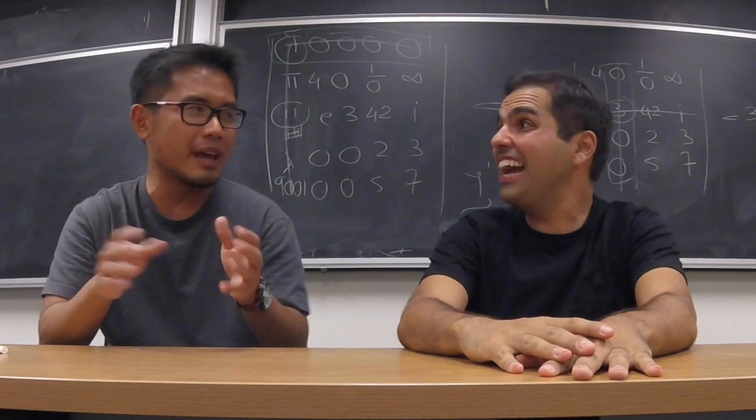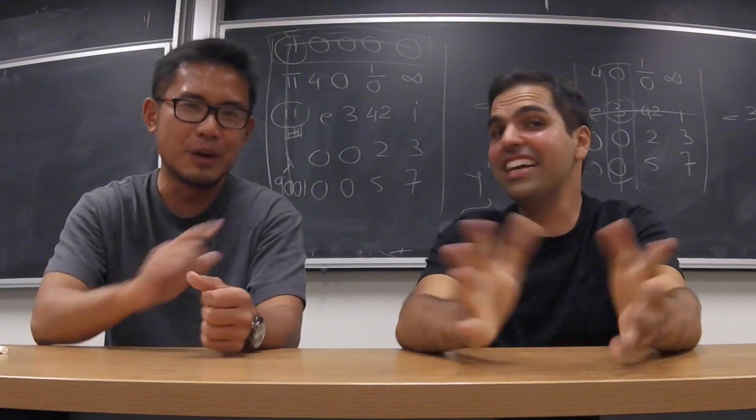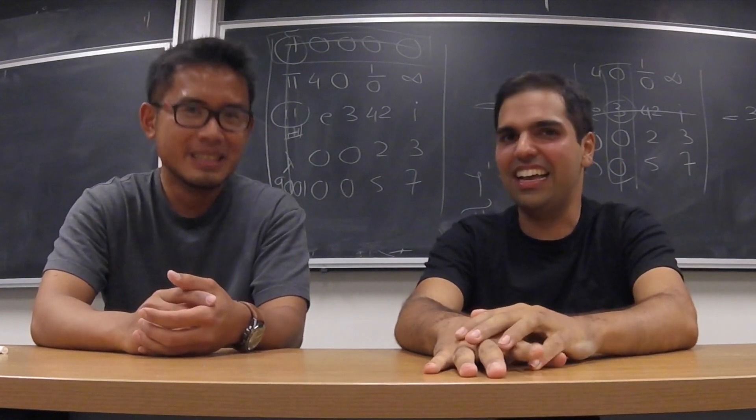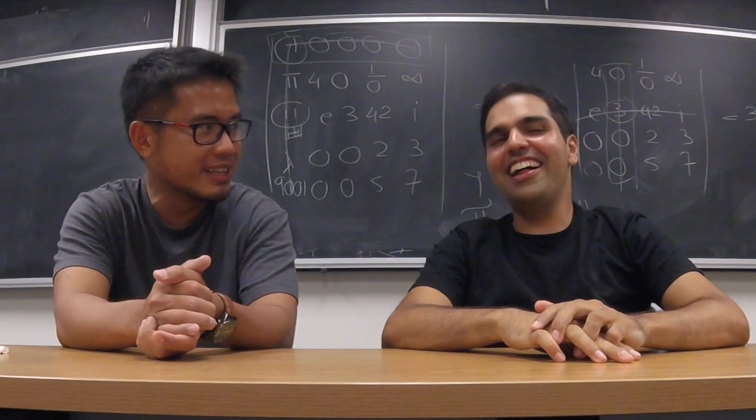An improper integral is the 1 over 1 plus x to the power from negative infinity to infinity. Yeah, you can do this very easily. Cauchy's theorem, right? Yes, Cauchy's theorem. Yeah, I remember that.